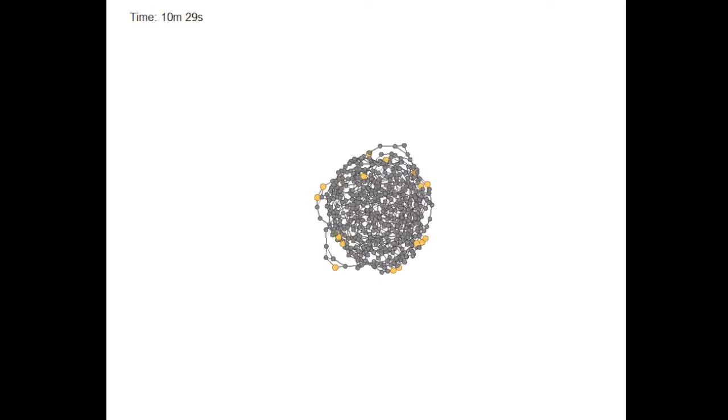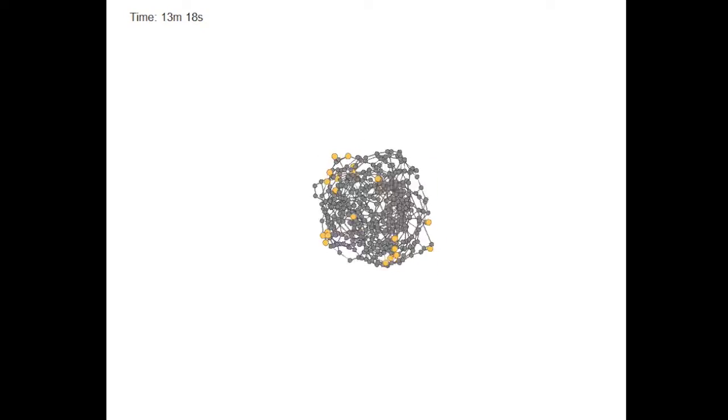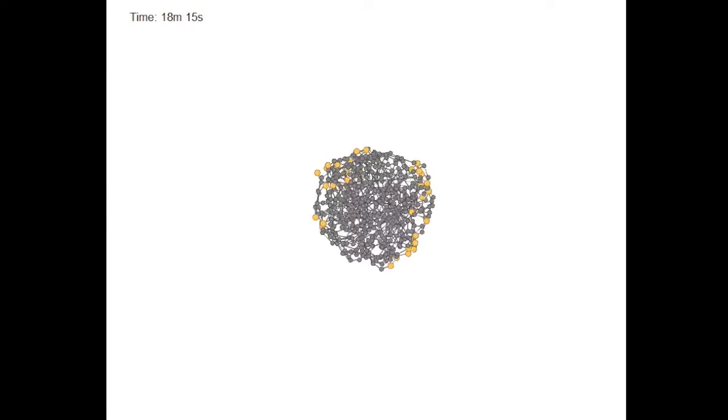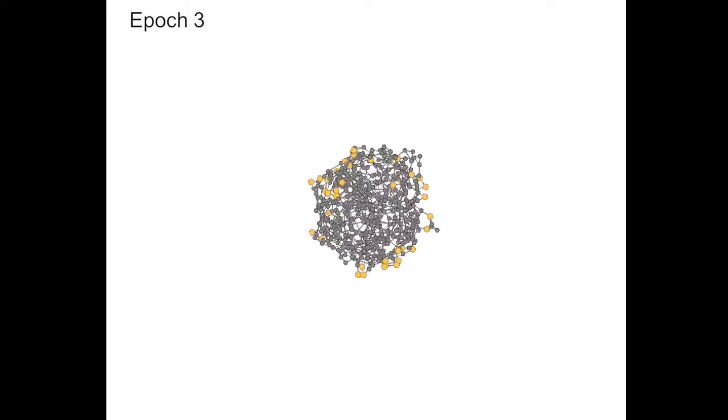Eventually, however, we get a collection of such nodes that is big enough to be the start of a real fibril structure, and this is what marks the beginning of epoch three.